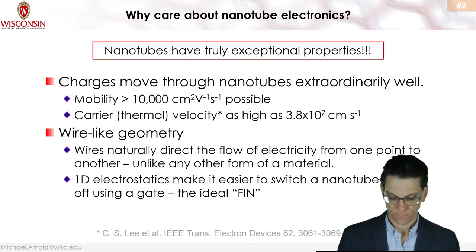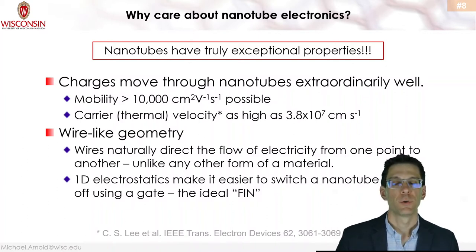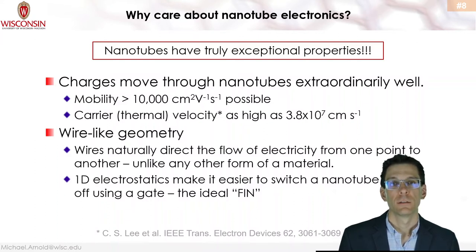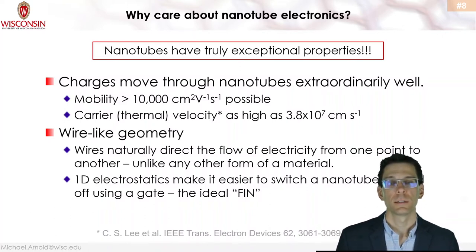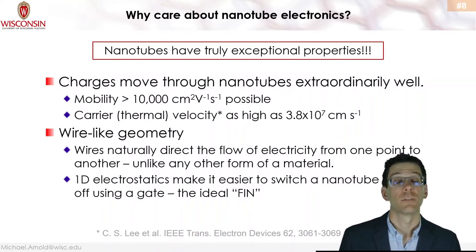Why care about nanotube electronics? Nanotubes truly have exceptional properties — charges move through them extraordinarily well. For larger devices where charges travel several hundred nanometers or more, the relevant metric is charge transport mobility, which can exceed 10,000 cm² per volt-second, compared to roughly 1,000 cm²/V·s in silicon. For smaller devices, the relevant metric is thermal velocity of charges, which is also very high in carbon nanotubes.